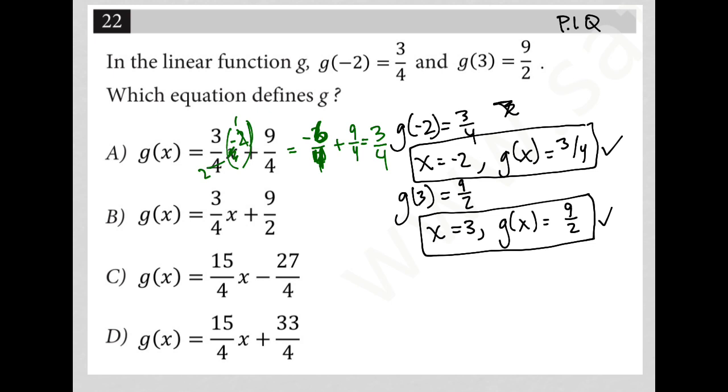But before I can definitely say A is the right answer, I also want to see, well, what happens when I plug in 3 for my x? So, I'm going to erase all this and see, well, what happens when I put 3 in for x? So, when I put a 3 here, I get 9 fourths plus 9 fourths, which is 18 fourths, and that is, in fact, 9 halves. So, both of these situations were correct. When I plugged in 3, I got 9 halves. When I plugged in negative 2, I got 3 fourths.